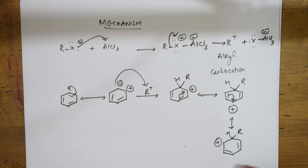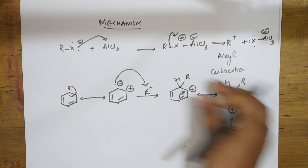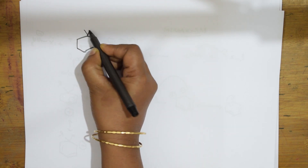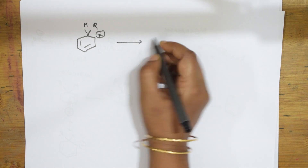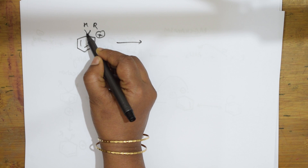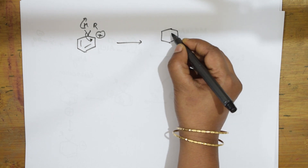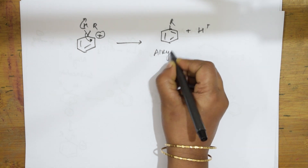In the next step, from the arenium ion intermediate, the pi bonds continue to shift. Finally, there is a cleavage of the C–H bond on the sp³ carbon: H⁺ is released and the pi system is restored. Only the alkyl group remains attached to the benzene ring, giving you alkyl benzene as the final product.